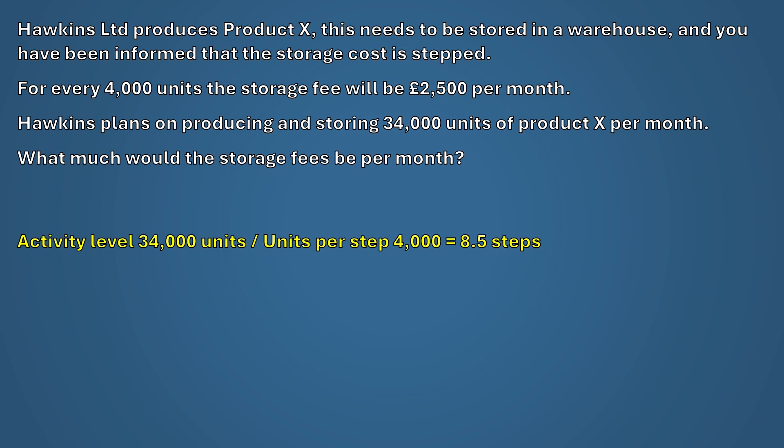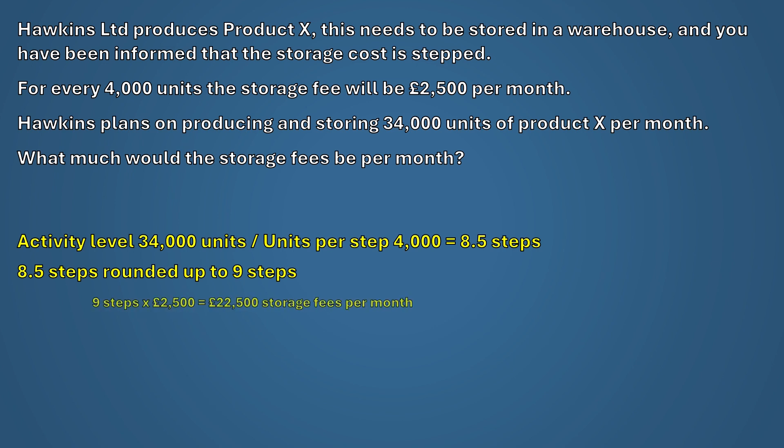Now you can't have a partial step. Once it crosses into the band the business must pay for the entire band, regardless of whether you go one unit over or 3,999 over. We therefore always round up the number of steps to the next whole number, and in this example 8.5 would go to 9. Now that we know how many steps are required, all we need to do is multiply by the cost per step: 9 steps × £2,500 = £22,500 in storage fees per month.